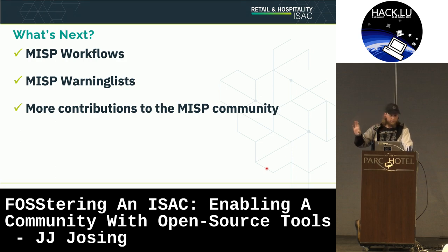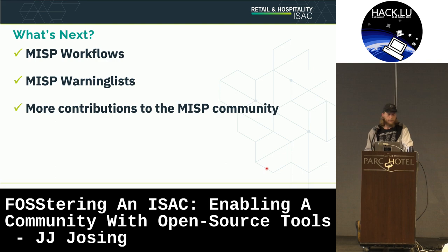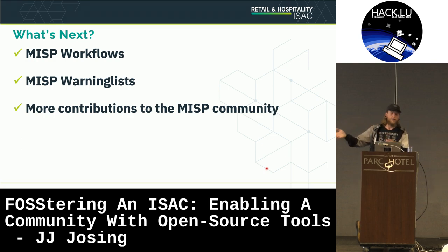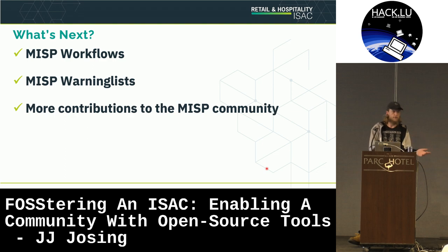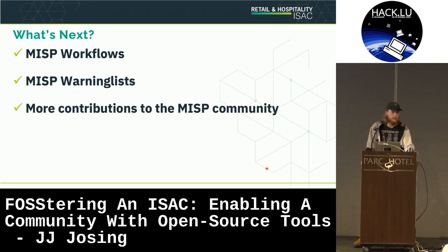We've had a few times where a member reached out to say an indicator from our automated enrichment and vetting process might not be 100% malicious — more just an indication of activity, like CDN sites being the main example. So we want to leverage the warning lists more, so that as part of a member's integration, they can pull the last 24 hours of vetted indicators while enforcing warning lists, preventing them from pulling any indicators flagged on those lists. And lastly, we'd like to do more contributions to the MISP community — our first area will be the MISP fraud galaxy we're working on, as there's nothing proprietary in there, and it would be good for the whole sector.